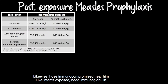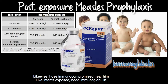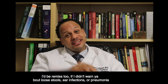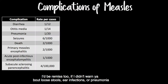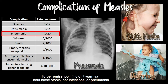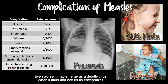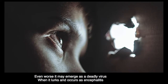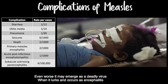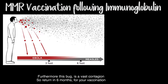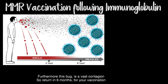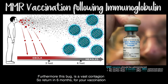Likewise, those immunocompromised — if exposed, they need immunoglobulin. I'd be remiss too if I didn't warn you about loose stools, ear infections or pneumonia. Even worse, it may emerge as a deadly virus when it occurs as encephalitis. Furthermore, this bug is a vast contagion — so we return in six months for your vaccination.